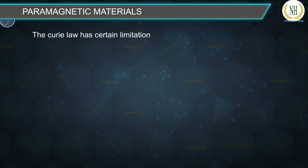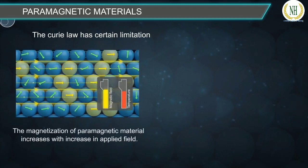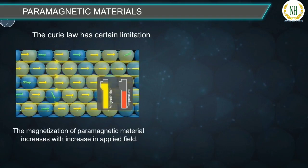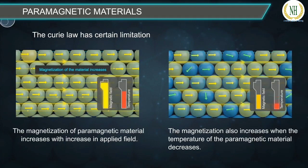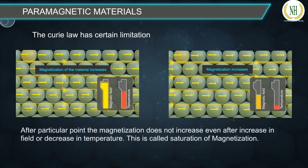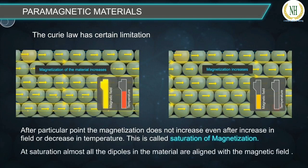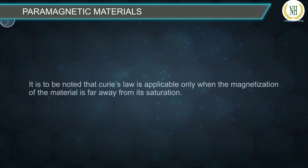Curie's law has certain limitations. The magnetization of a paramagnetic material increases with increase in applied field and decreases with increase in temperature. However, after a particular point, the magnetization does not increase even with further increase in field or decrease in temperature. This is called saturation of magnetization. At saturation, almost all the dipoles are aligned with the magnetic field. Curie's law is applicable only when the magnetization is far from its saturation.